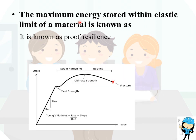The maximum energy stored within the elastic limit of a material is known as proof resilience. The value of proof resilience can be found by integrating the stress-strain curve with limits from 0 to the elastic limit of the curve.